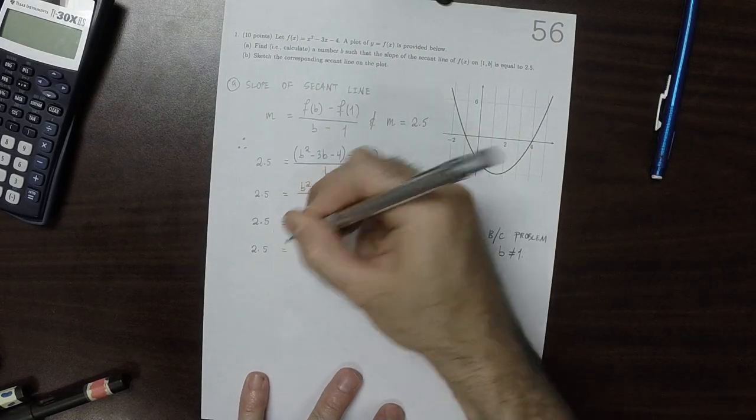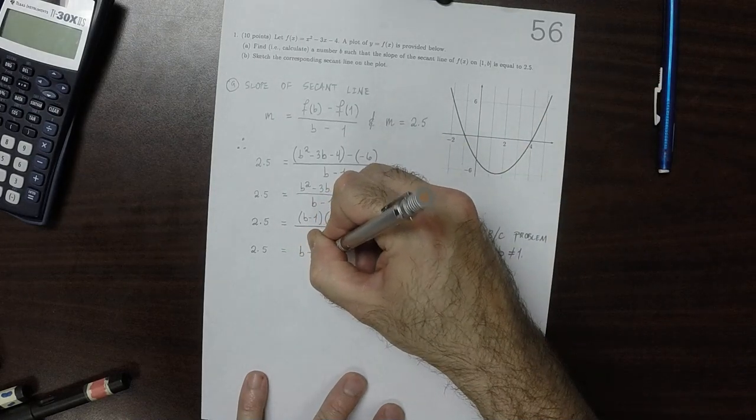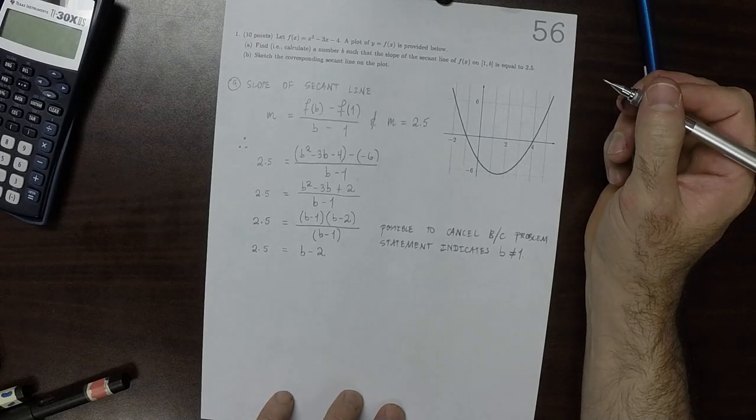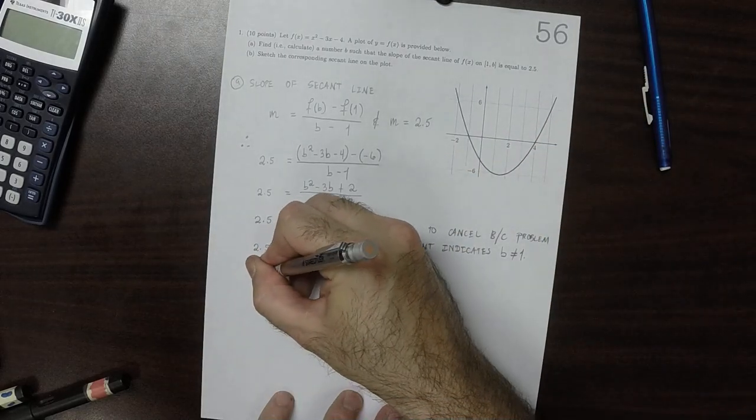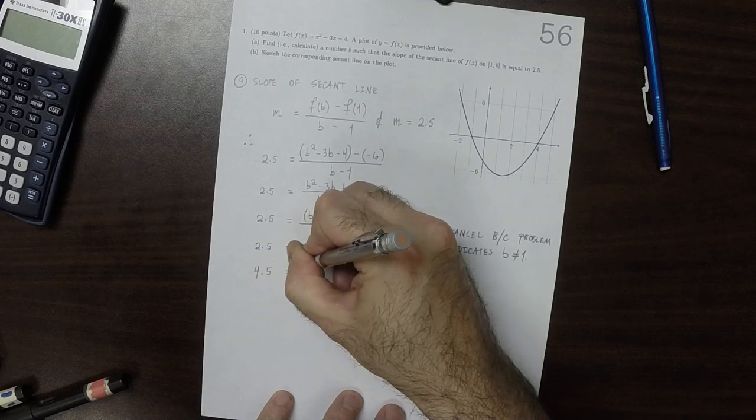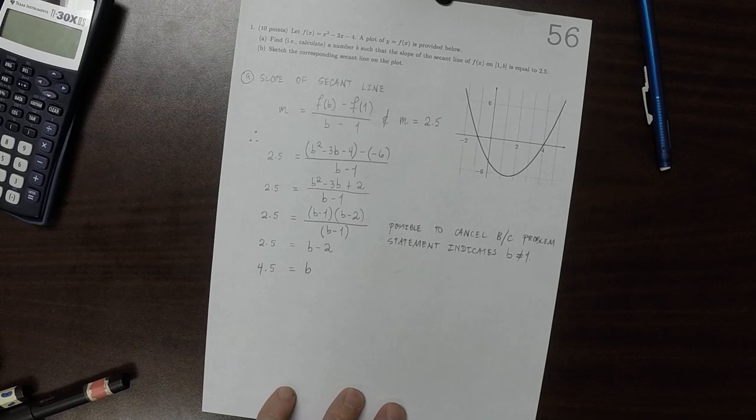So 2 and 1 half is equal to b minus 2. So then we can add 2 to both sides. So 4 and 1 half is b. OK.